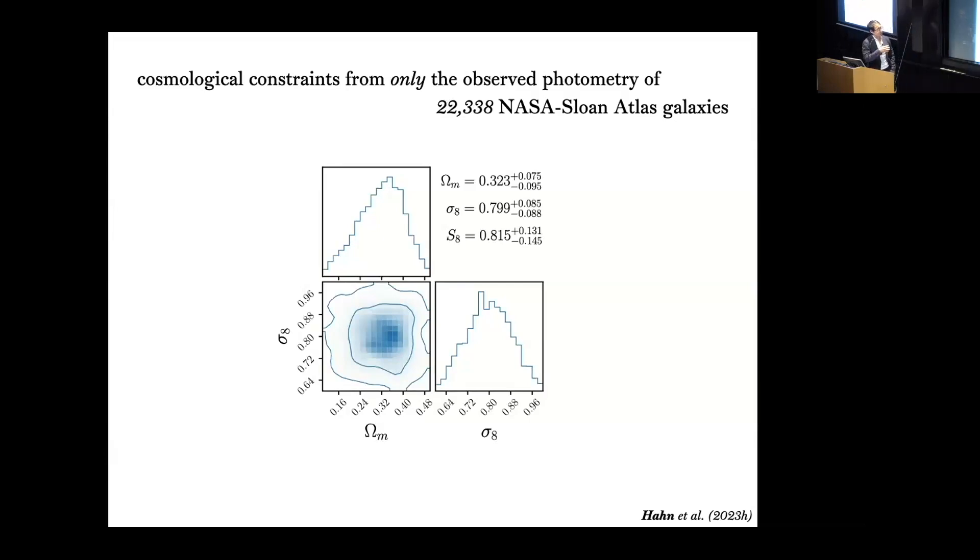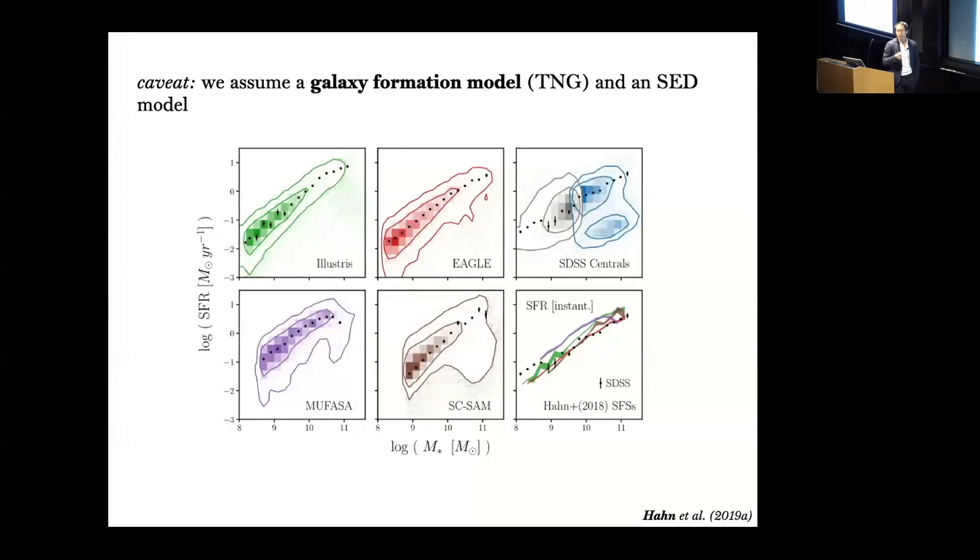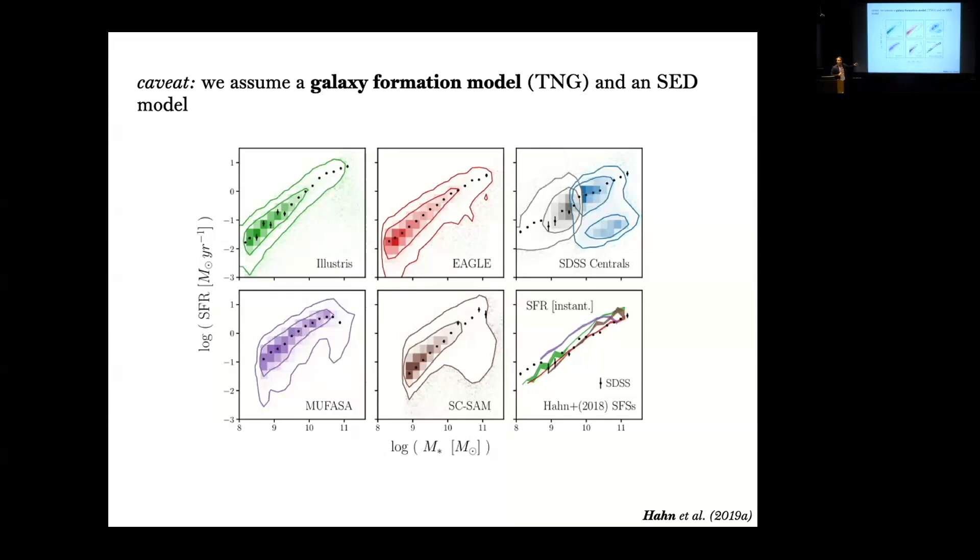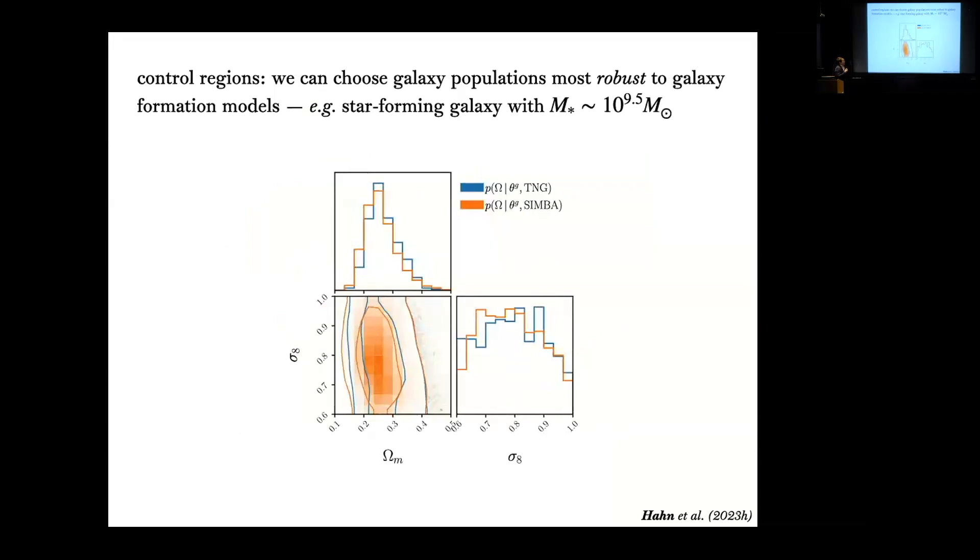Of course the elephant in the room is that there are obviously some caveats to this analysis which is that we assume a galaxy formation model. In our case we assume the TNG. This is a figure that's kind of highlighting the issue with that assumption. I'm showing you the star formation rate versus stellar mass relations of a bunch of different galaxy formation models. If you look at the bottom right panel there, it's showing you the star forming sequence and the main point here is that you can see their significant discrepancies. So this raises serious questions about how robust is this constraint to our choice of galaxy formation model.